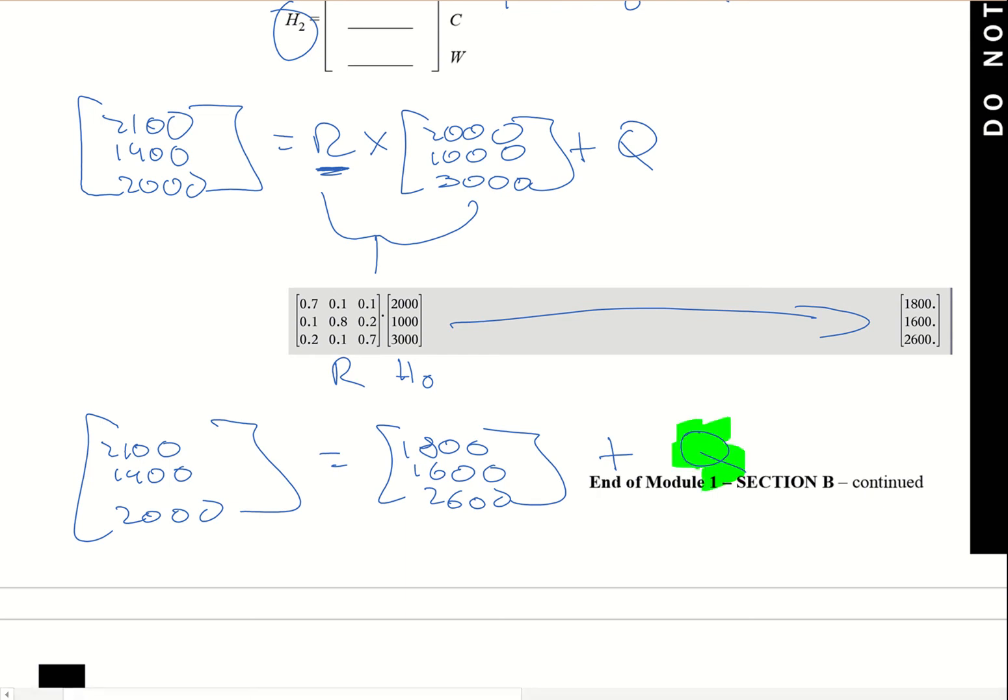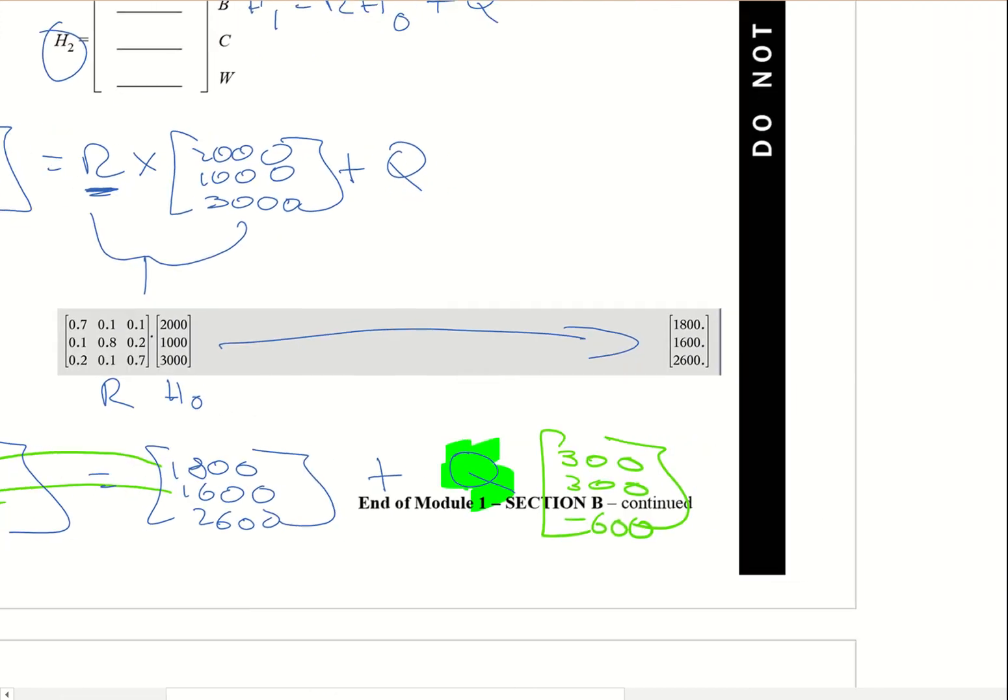This is where we work out what q is. For me to go from here to here, that's going to be where q would be. So I would have to have 1800 go to 2100, which would be 300. From 1600 to 1900, that's another 300. And then go from 2600 to 2000 would be minus 600. So now I've worked out what q equals.